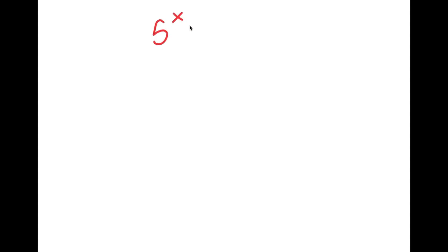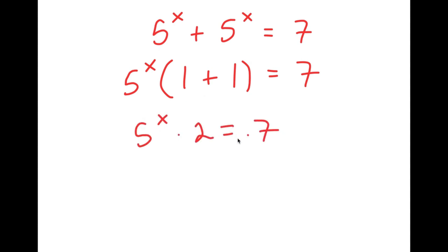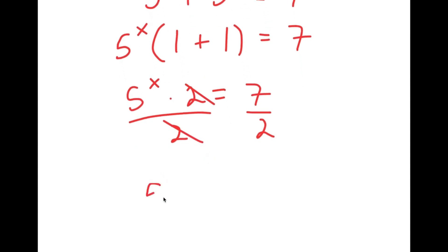In this video, I'm going to solve the equation 5 to the power of x plus 5 to the power of x equals 7. To solve this, I'll first factor out 5 to the power of x. I get 5 to the power of x times 1 plus 1 equals 7, and 1 plus 1 is 2, so 5 to the power of x times 2 equals 7. Dividing both sides by 2, I get 5 to the power of x equals 7 over 2.